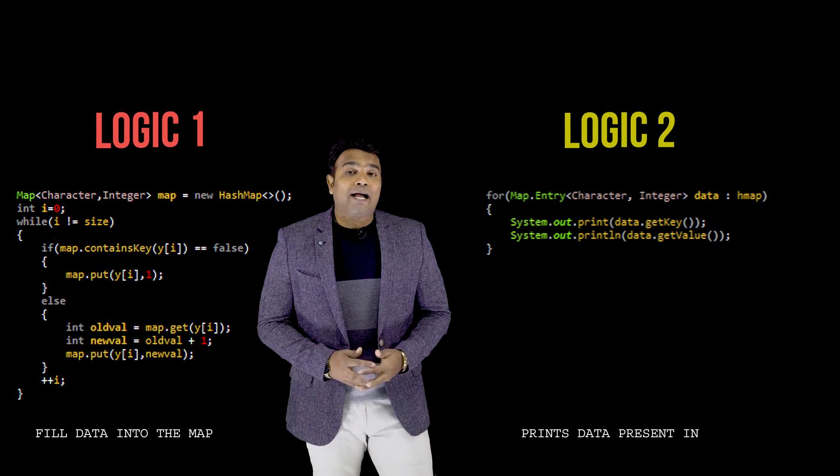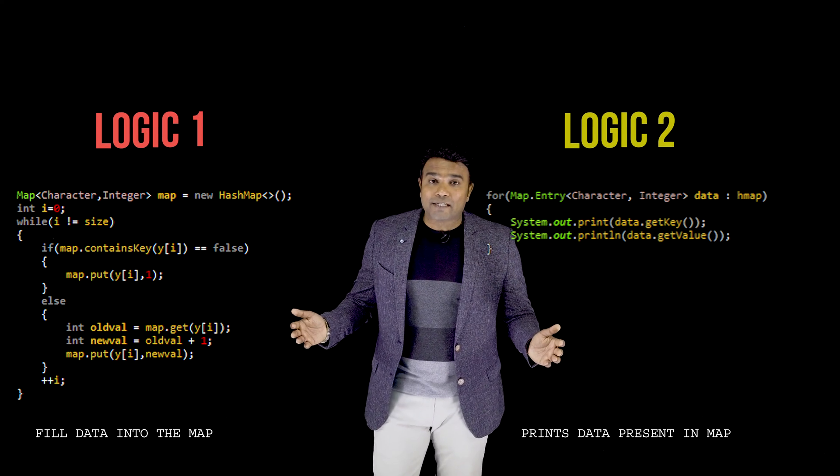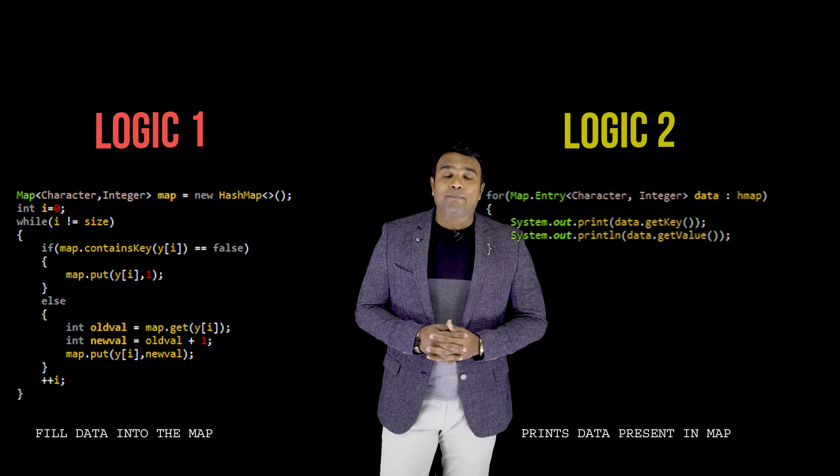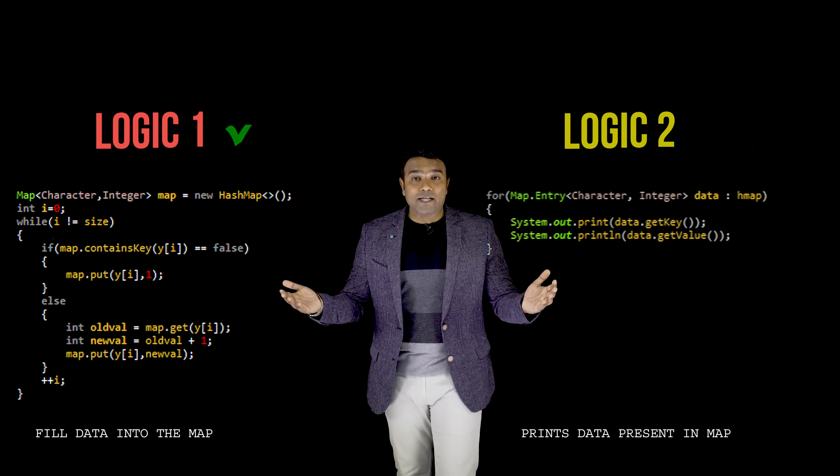Through the previous episode and this episode, you have understood two things: first, the logic to place data inside the map data structure as key-value pairs, and second, the logic to access and print data present inside the map.